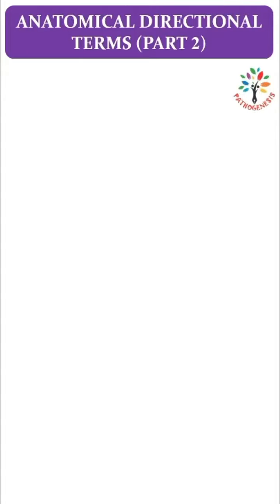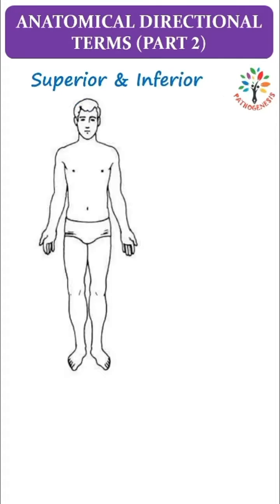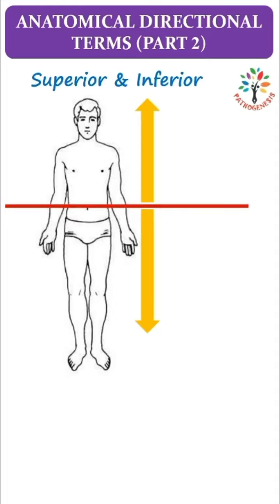Anatomical Directional Part 2: Superior and Inferior. This time we are going to divide the body into upper and lower portions using a transverse plane. The transverse plane will be the reference line while describing superior and inferior.